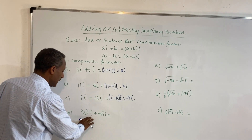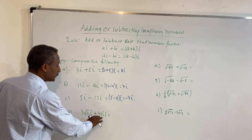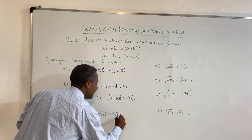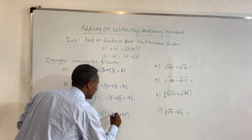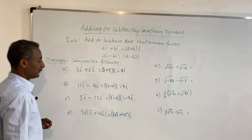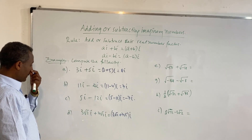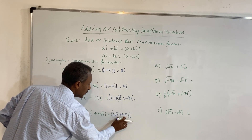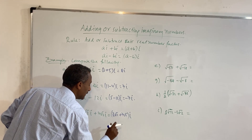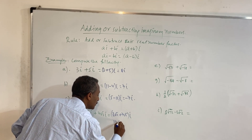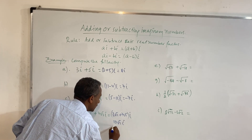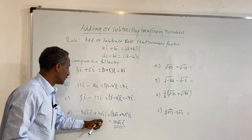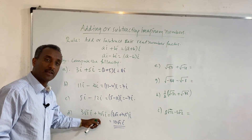3 root 2 i plus 7 root 2 i is equal to 3 root 2 plus 7 root 2, the whole times i. Because this is the same radicand — root 2 — we add 3 plus 7 to get 10, so the answer is 10 root 2 i. This is the sum of these two imaginary numbers.